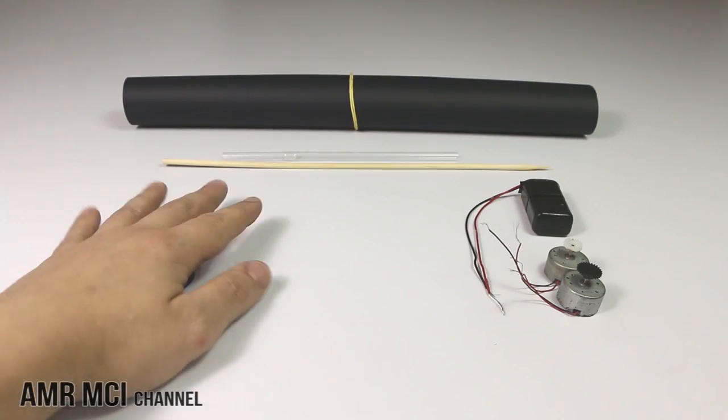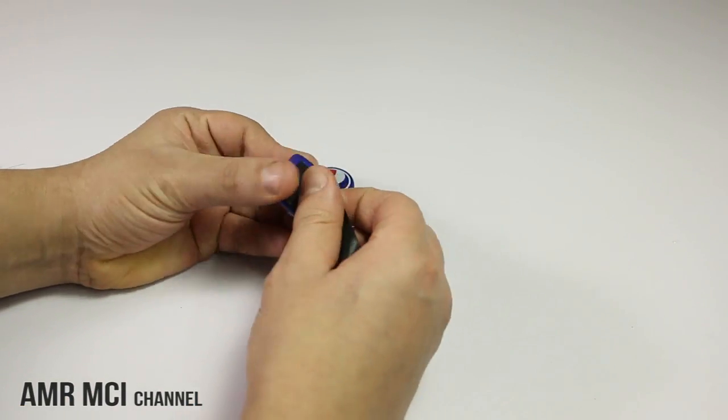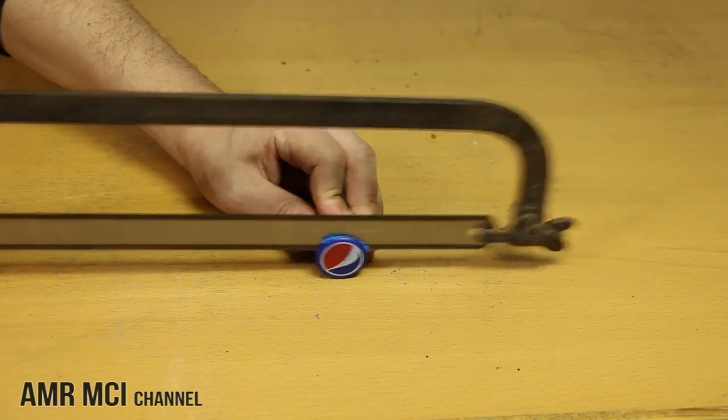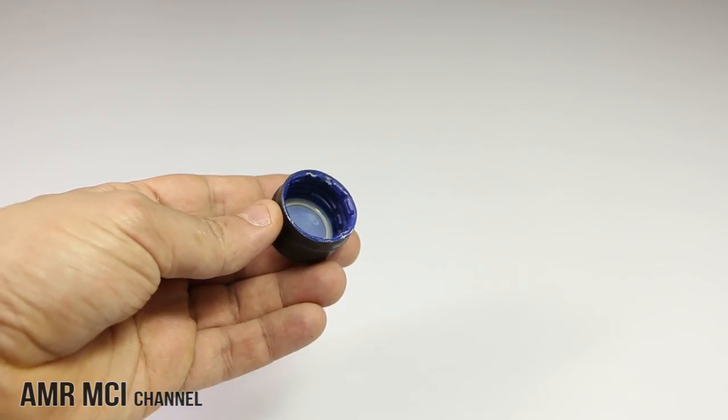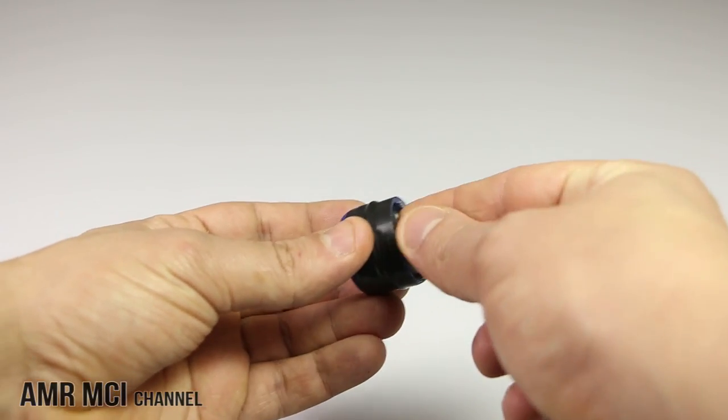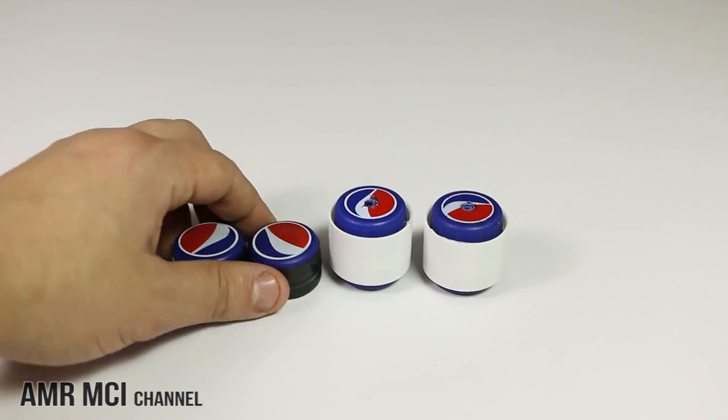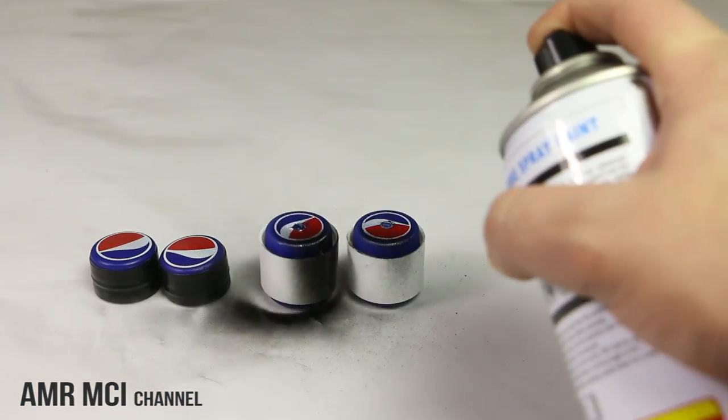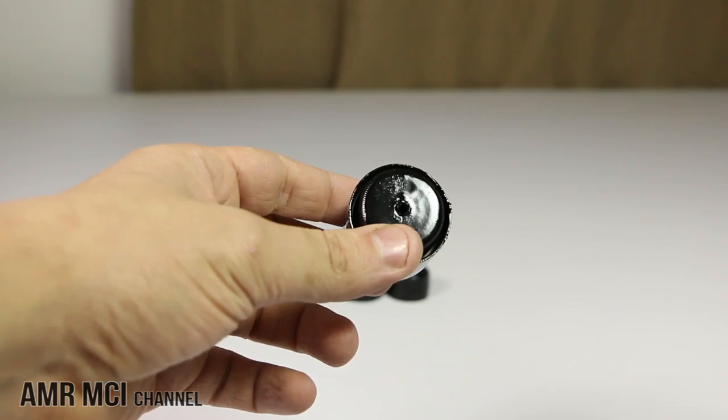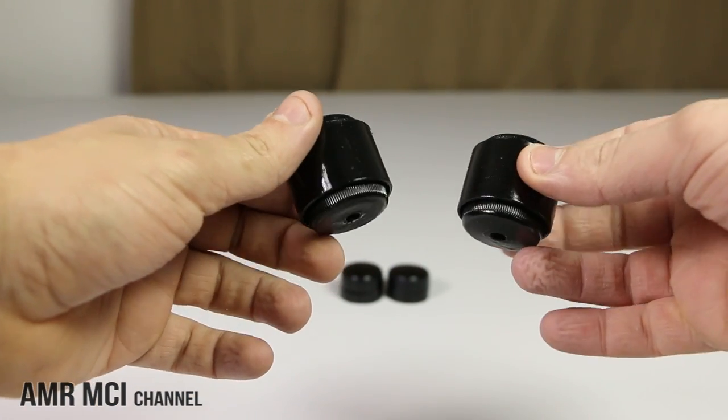For the front wheels, we are going to take another four caps and tape each one with another, then open one side of each one with a hacksaw so that the motor can fit inside. But before that, take the four wheels you made and paint them in black, as the Batman car is fully in black.